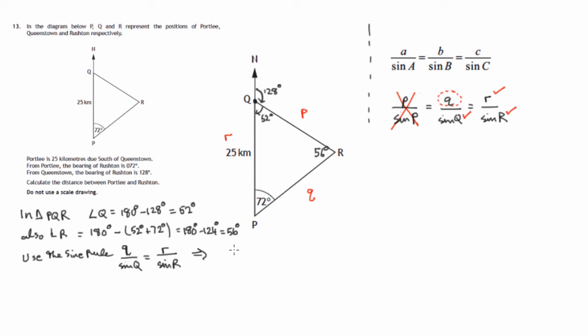So substituting values. Well, let's not do that first. Let's say we're trying to get Q on its own. So we're trying to get rid of this divide by sine Q. So let's do the opposite. Let's multiply both sides of this equation by sine Q.